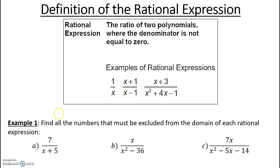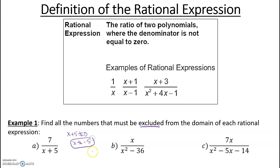Example one says find all the numbers that must be excluded from your domain. Remember, your denominator cannot equal zero. So we know X plus five cannot equal zero. Subtract five from both sides — X cannot equal negative five. So the number that has to be excluded from our domain is negative five.